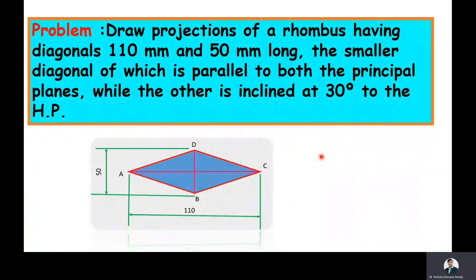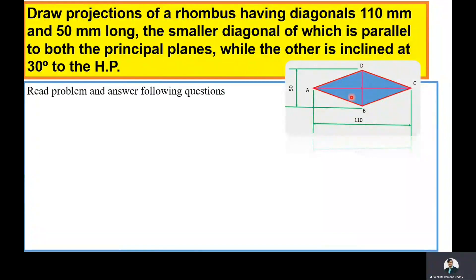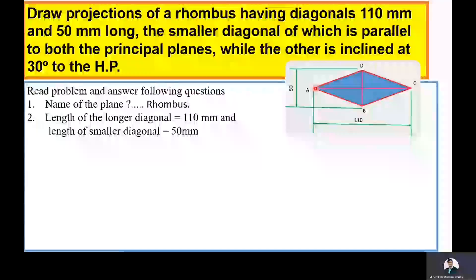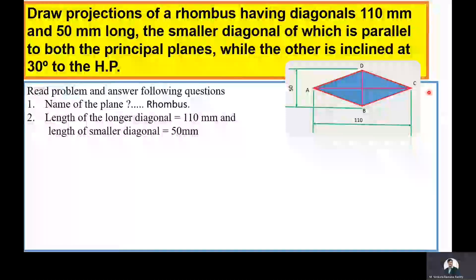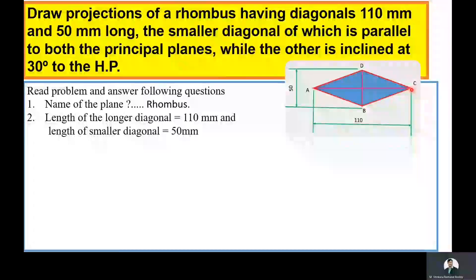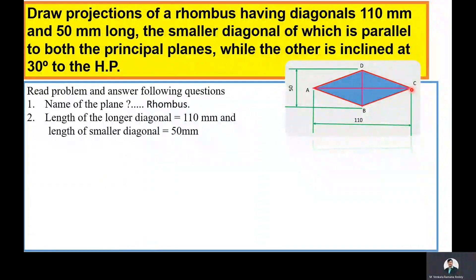Now we will write the data. The name of the plane is rhombus. The length of the longer diagonal is 110 mm and the length of the smaller diagonal is 50 mm. In the problem, it is mentioned that the longer diagonal AC is inclined at an angle of 30 degrees to the HP. That means we are keeping corner A on HP and tilting the longer diagonal AC at 30 degrees. Therefore, the surface inclination of the plane with HP equals 30 degrees; that is, theta equals 30 degrees.